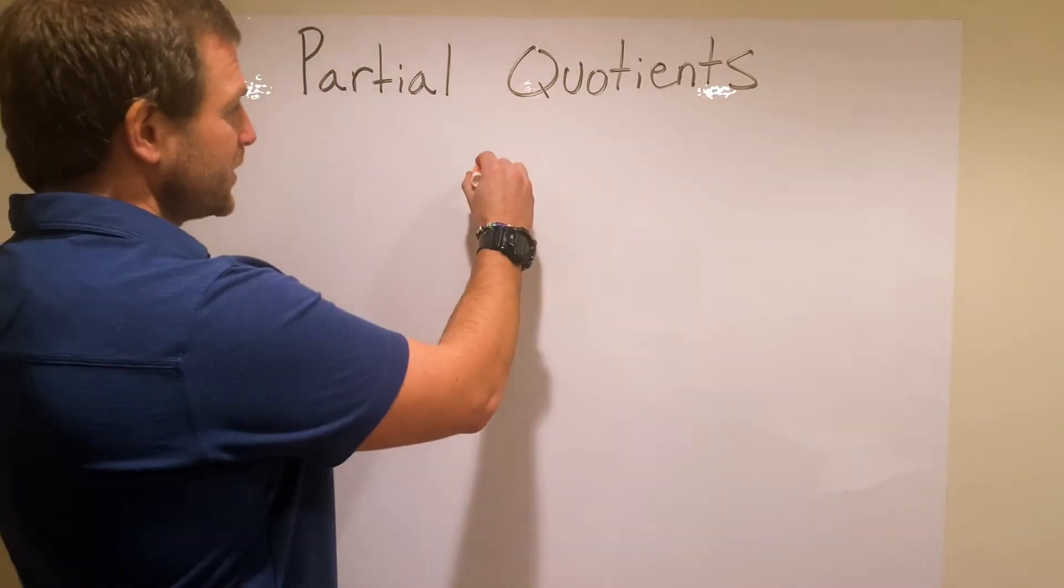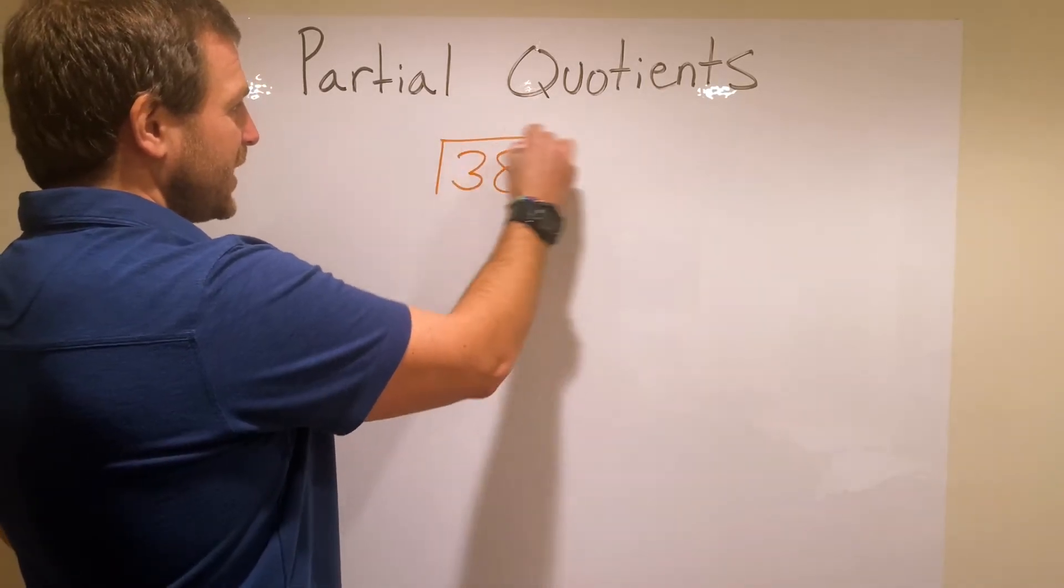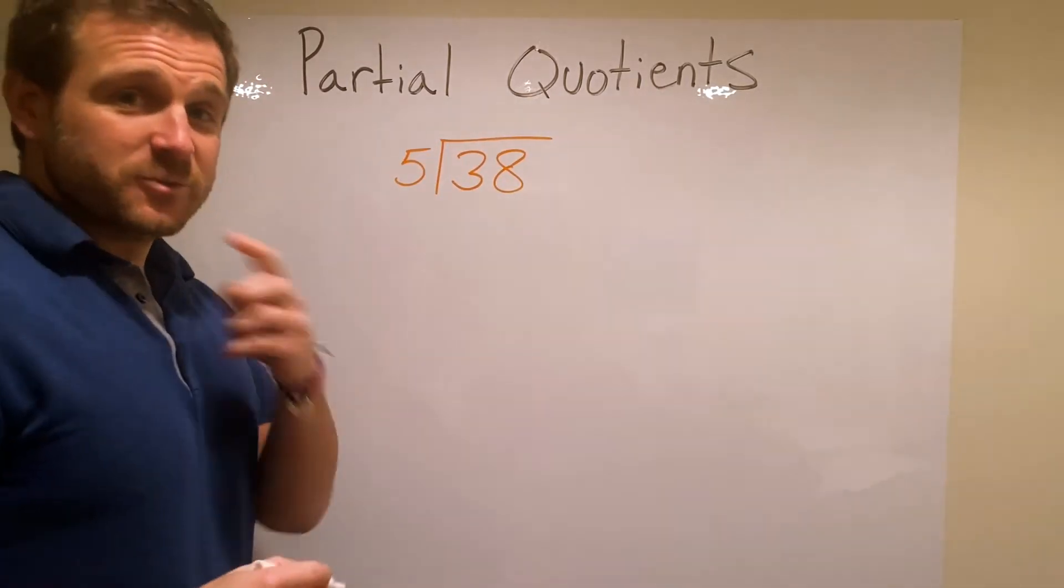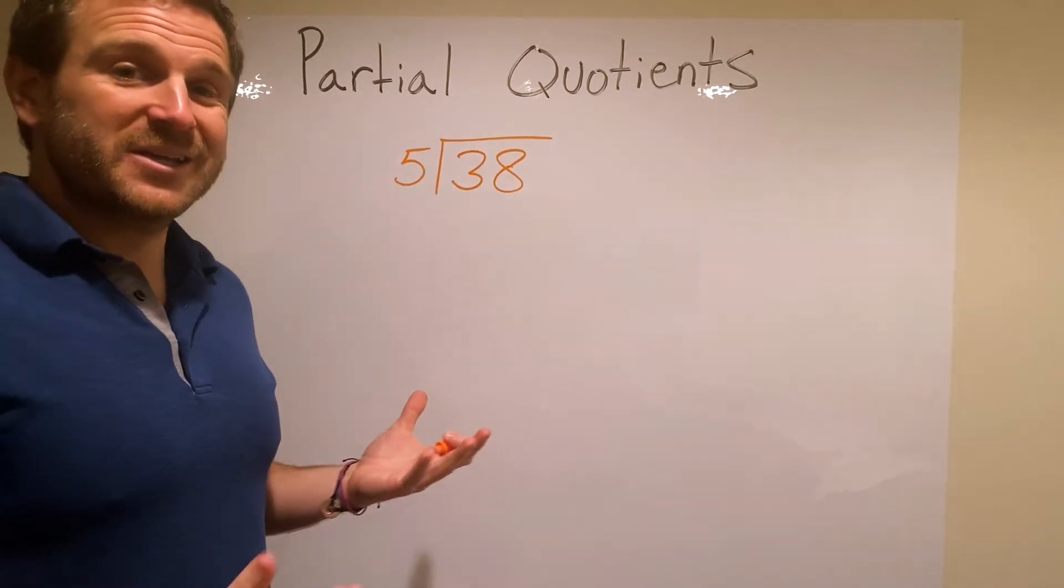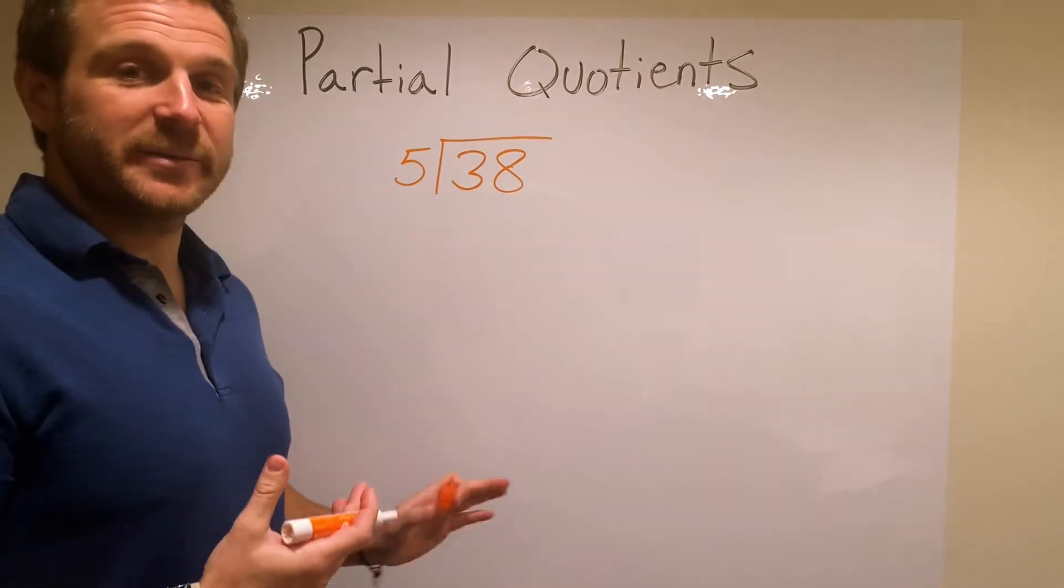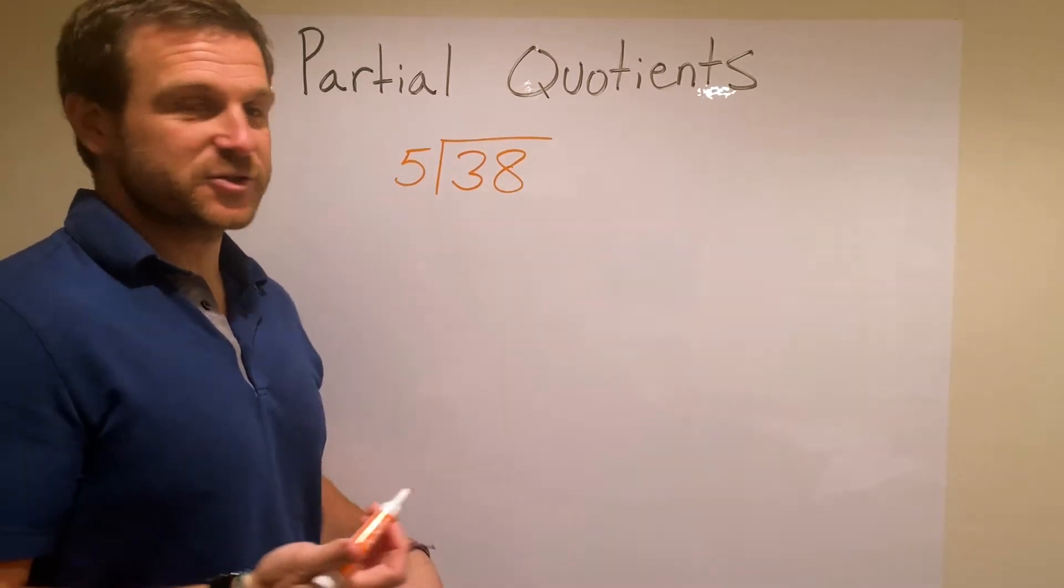So we're going to be using the equation 38 divided by 5. I write it this way and you'll see why in just a minute. It can be used other ways, but this way with the tail coming down is really the most effective way that I've seen it. It's really easy for students to use.